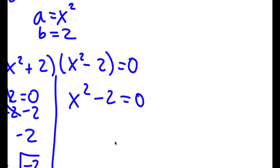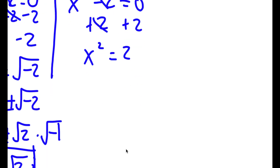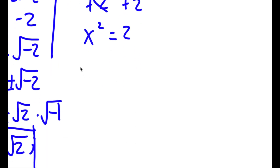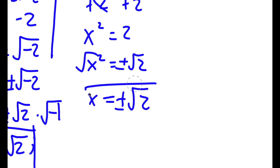Now for the second equation, I have x squared minus 2 equals 0. I can add 2 on both sides — these two cancel out — and I get x squared is equal to 2. Now if I take the square root on both sides, I get x is equal to positive or negative square root of 2.